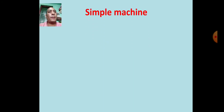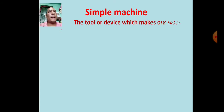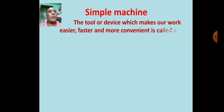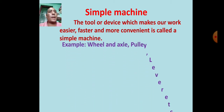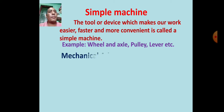A simple machine is a tool or device which makes our work easier, faster, and more convenient. Examples include wheel and axle, pulley, lever, etc.